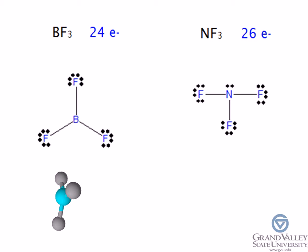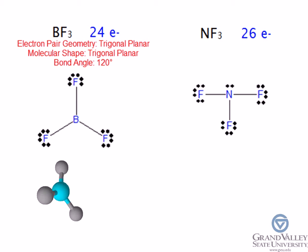Given that there are three electron groups and three bonded atoms in the molecule BF₃, the electron pair geometry and molecular shape is trigonal planar. The bond angle for this molecule is 120 degrees.